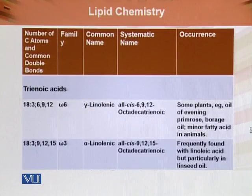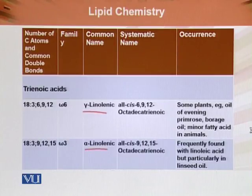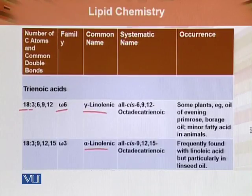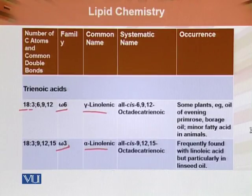The trienoic acids have three double bonds. These include gamma-linolenic acid and alpha-linolenic acid. Gamma-linolenic acid is an omega-6 fatty acid, an 18-carbon compound with 3 double bonds at positions 6, 9, and 12. Alpha-linolenic acid is an omega-3 fatty acid — as mentioned, omega-3 fatty acids are beneficial and have an anti-inflammatory effect. It also has 18 carbons with 3 double bonds at positions 9, 12, and 15.